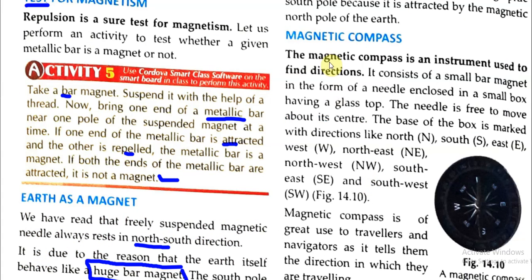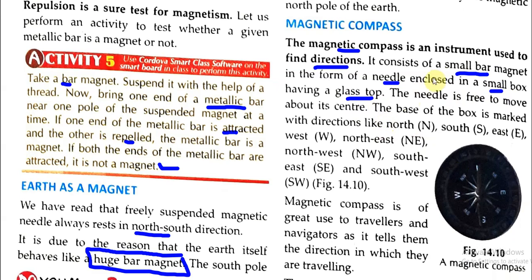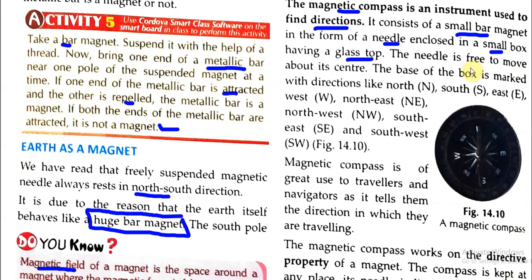A magnetic compass is an instrument used to find directions. It contains a needle in the form of a magnet which is free to move about its center.